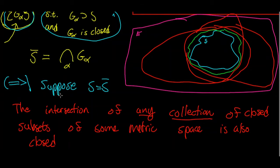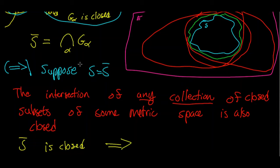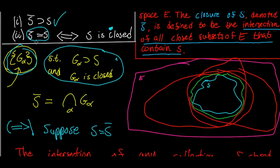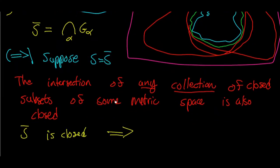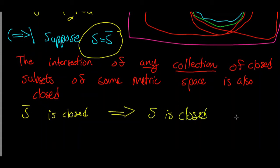So we can now say with confidence that the closure of S is closed, since it is the intersection of a collection of closed sets. But we're supposing that S is equal to the closure of S. So since the closure of S is closed, and since the closure of S is equal to S, we can conclude that S is closed. And we've just proven the right direction.